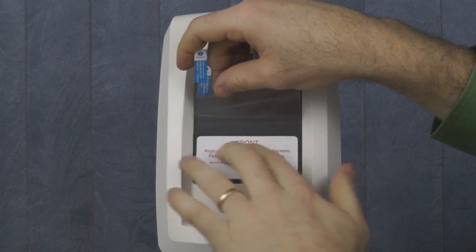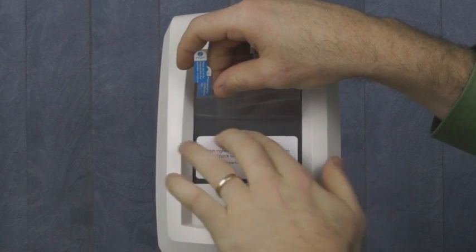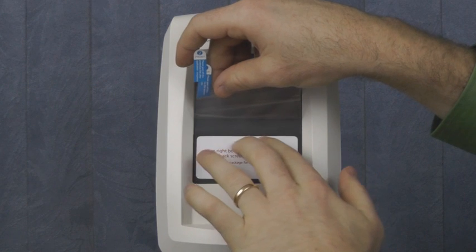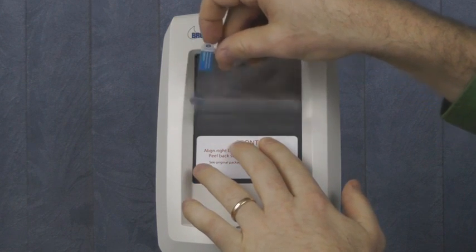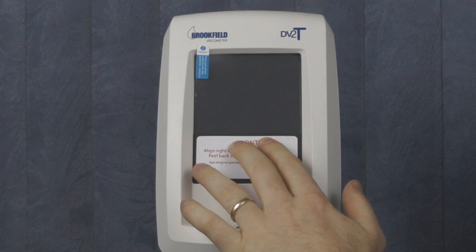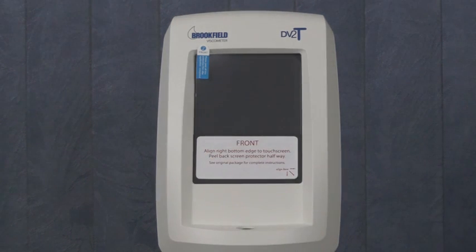Once aligned, gently press the exposed side of the protector against the screen, and then continue to peel back tab 1 until it is removed. Make sure not to touch the exposed surface of the screen protector.